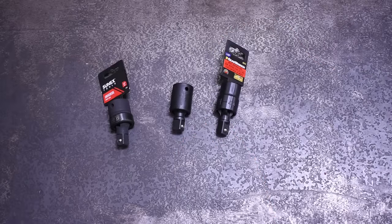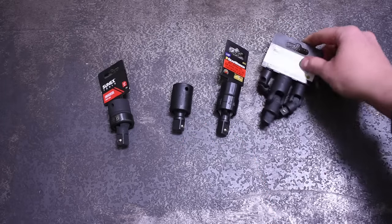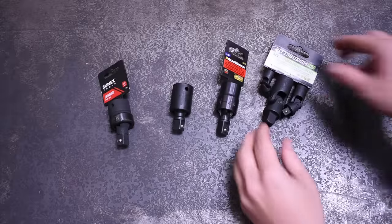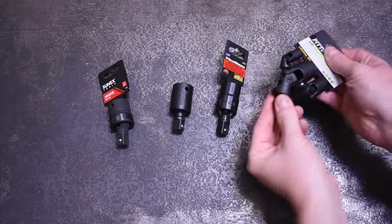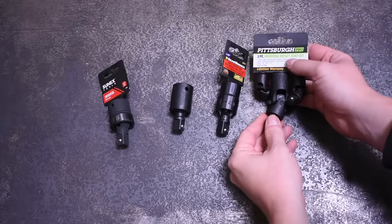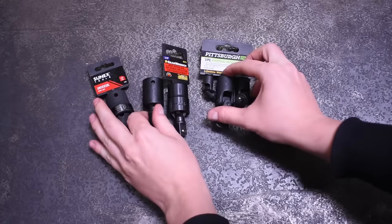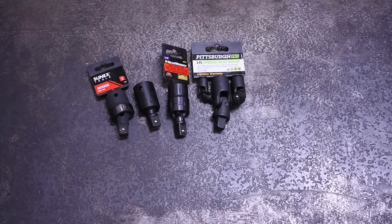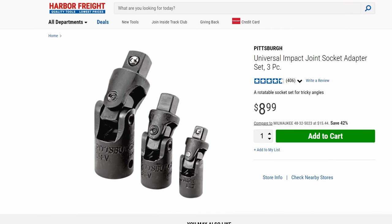Then we got the Harbor Freight U-joint style universals, which were a wallet crunching nine dollars for the three, so about three dollars a pop. These are different than the others in that they can do a full ninety degrees articulation, but we assume you pay for it in durability and power transfer. They do call them impact adapters, so we'll have to see.